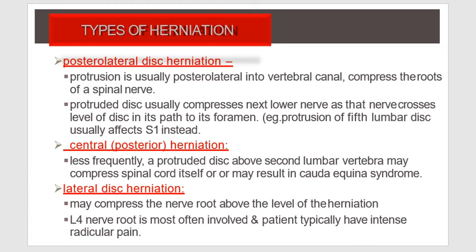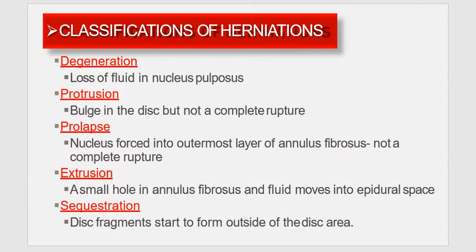The L4 nerve root is most commonly involved, and patients typically have intense radicular pain. Classifications of herniation are: degeneration — loss of fluid in the nucleus pulposus; protrusion — a bulge in the disc but not a complete rupture; prolapse — nucleus forced into the outermost layer of the annulus fibrosus, not a complete rupture; extrusion — a small hole in the annulus fibrosus and fluid moves into the epidural space; and sequestration — disc fragments form outside the disc area.